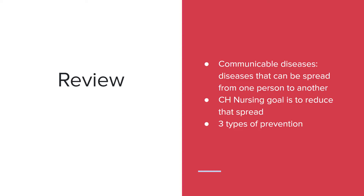Quick review: a communicable disease is a disease that can be spread from one person to another. The community health nursing goal is to reduce that spread. The three types of prevention are primary — catching it before the person even gets the disease; secondary — catching it before the person has signs and symptoms; and tertiary — the person already has the disease but we reduce the long-term side effects.